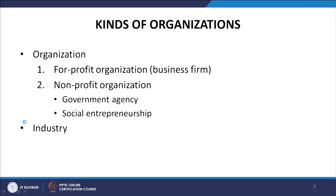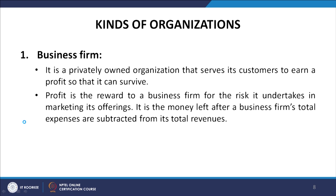What are the different kinds of organizations? The first kind is for-profit organizations — normal business firms. The second kind are non-profit organizations, which include government agencies and social entrepreneurship. And then there is another concept called an industry. Let us look at each one of them.